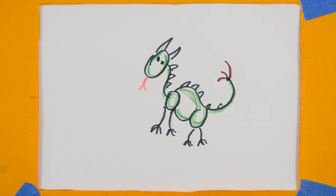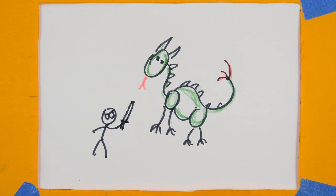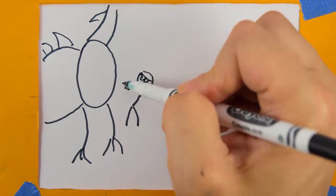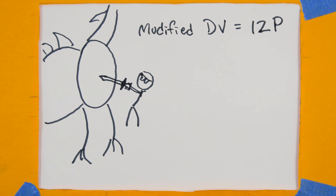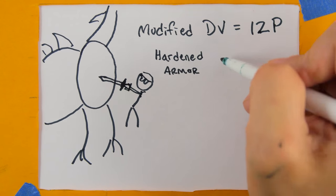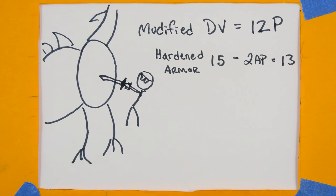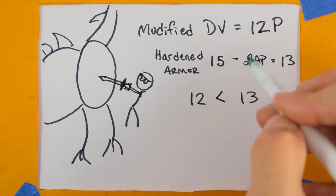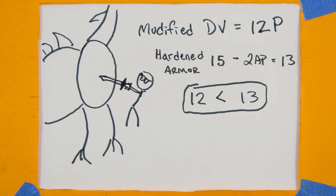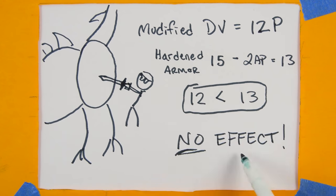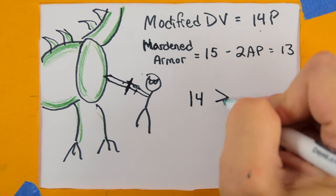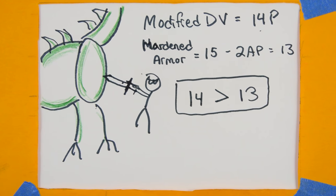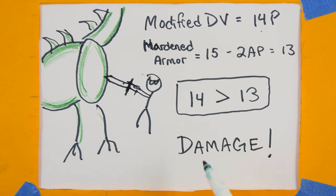First, you must determine if the attack is strong enough to even penetrate the armor at all. Once the attack is made, determine the modified damage value of the attack. Armor penetration counts in this case, so subtract the weapon's AP from the hardened armor's rating. If the modified damage value is lower than the AP adjusted hardened armor rating, then the attack does not penetrate the armor and has no effect at all. If the modified damage value is greater than or equal to the AP adjusted hardened armor rating, then the attack might do some damage.